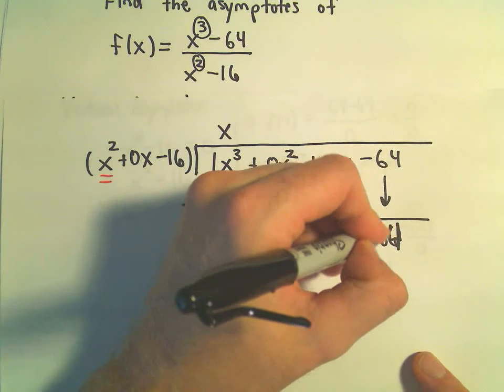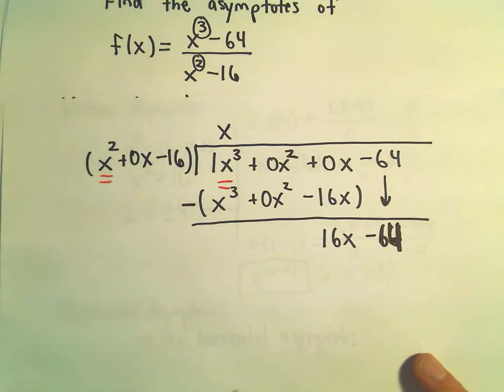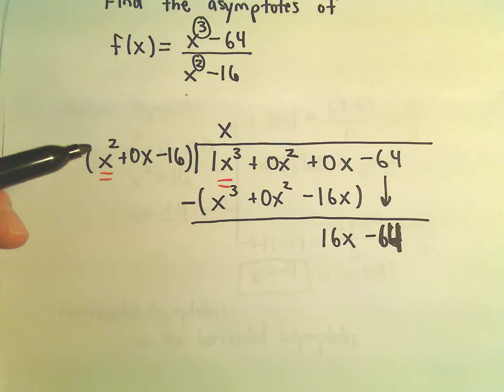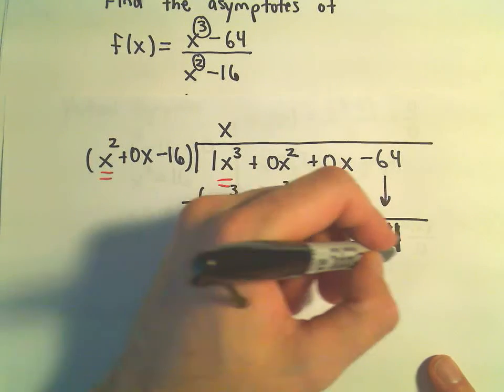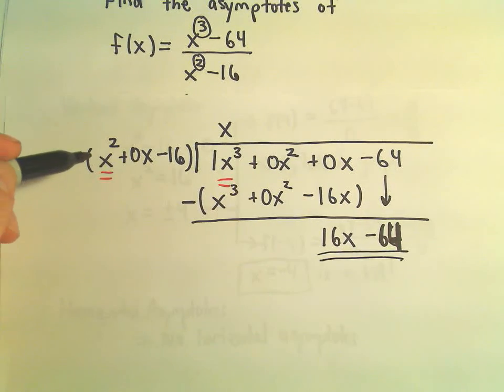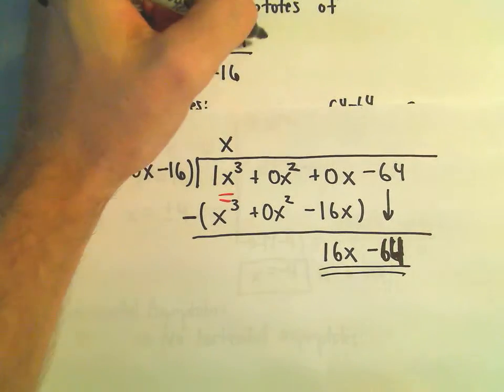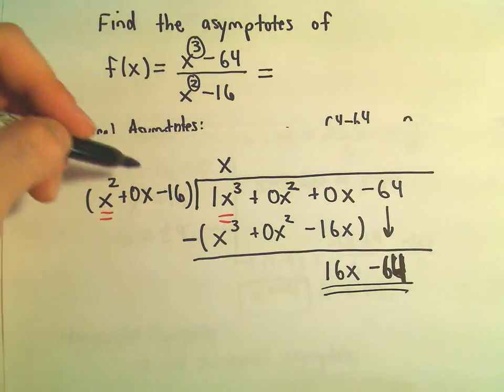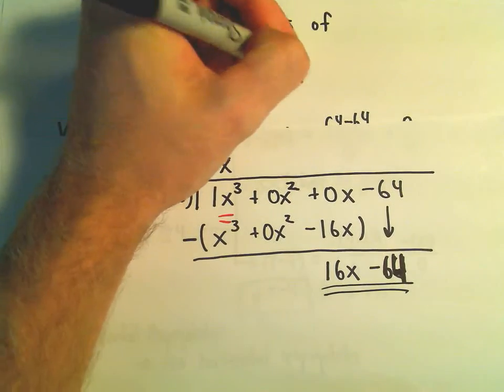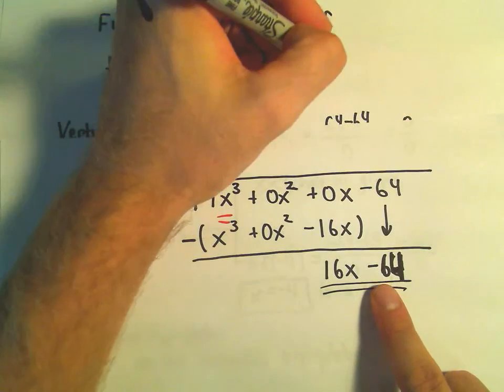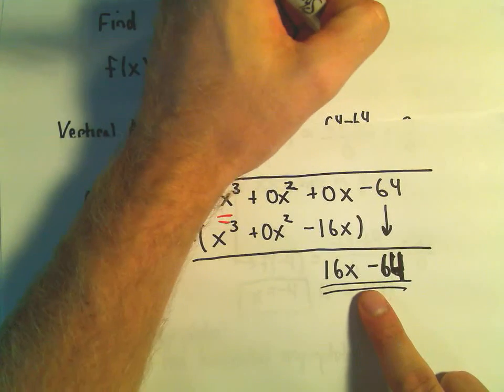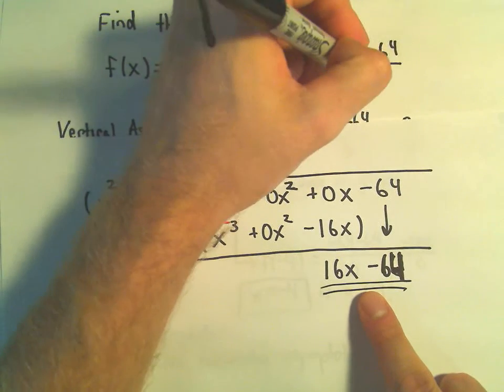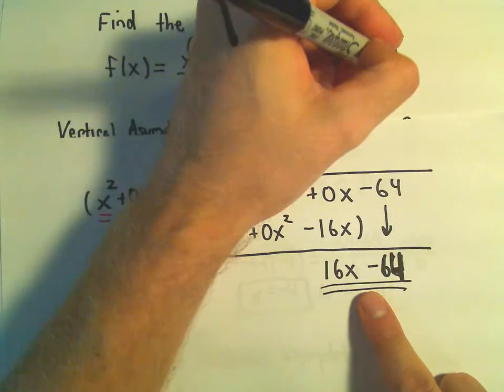Whoops, I'm still looking at 16s there. So we have 16x minus 64. And again, we stop doing long division when our remainder has less degree than what we're dividing by. So really we could write our original function x cubed minus 64 over x squared minus 16. We could write that as x and then we could state our remainder as this. Or we can simply write it as 16x minus 64 over x squared minus 16.